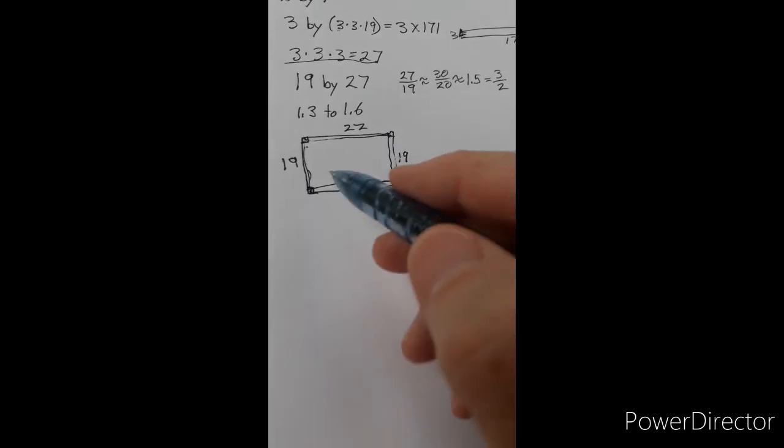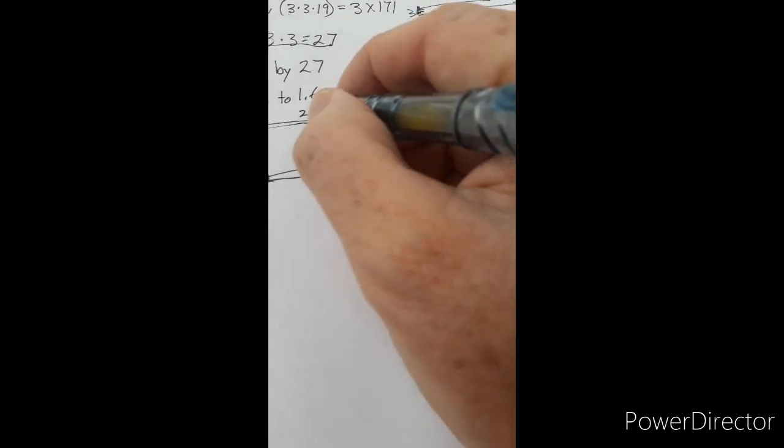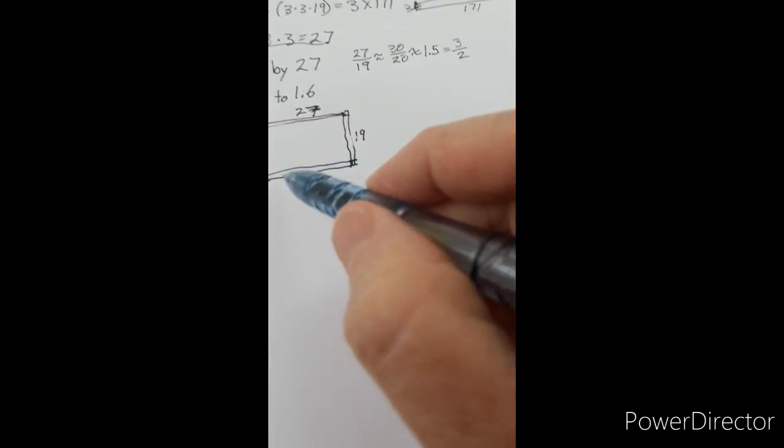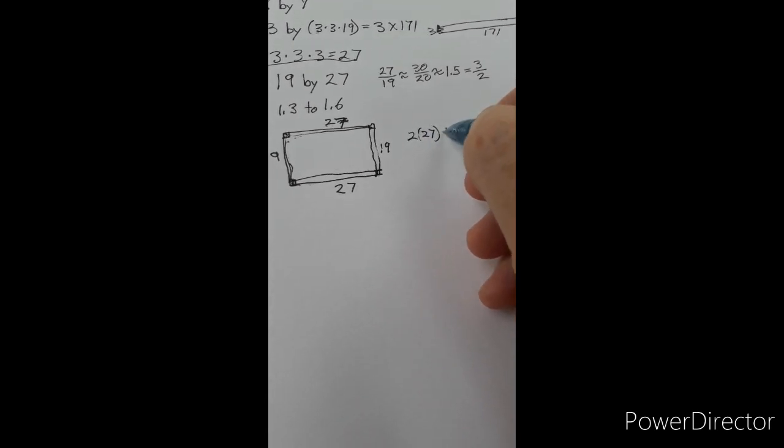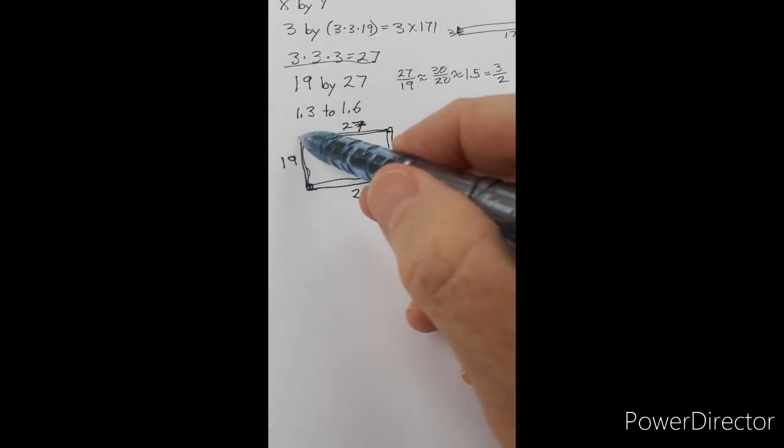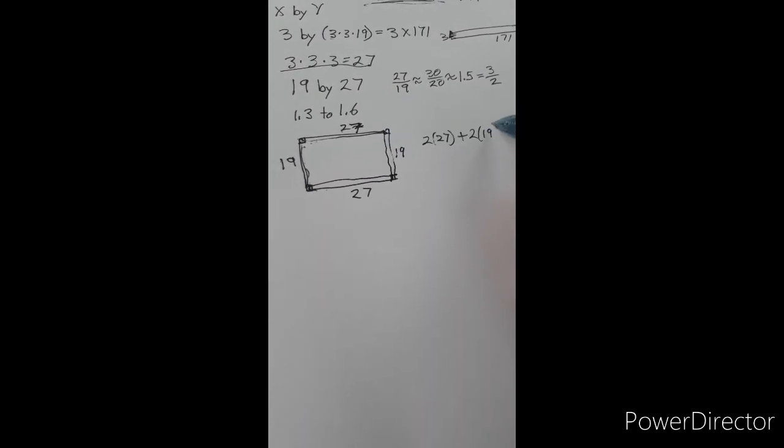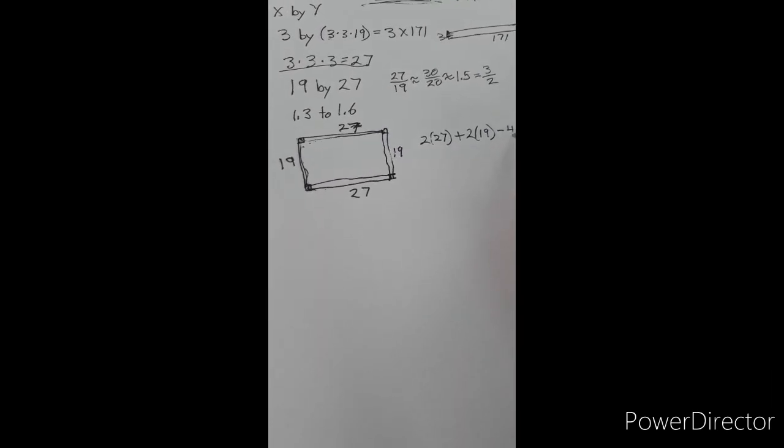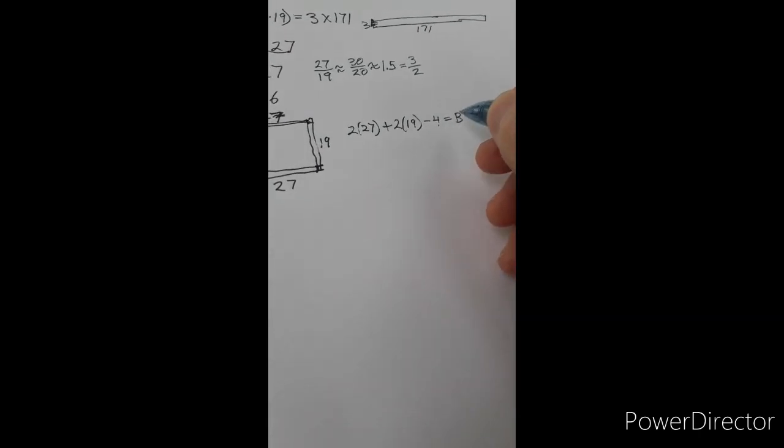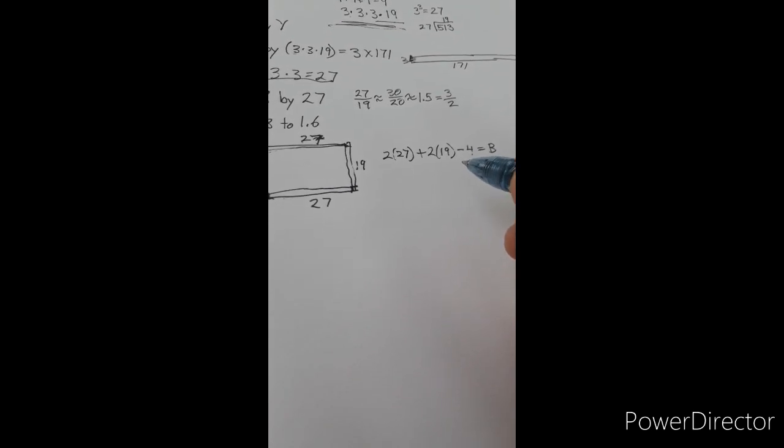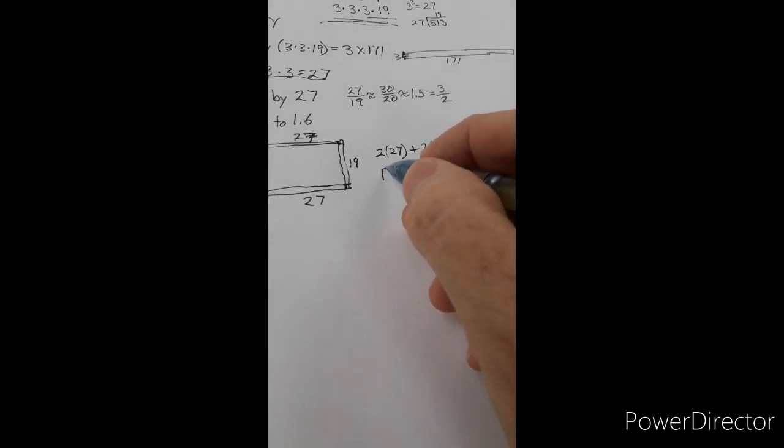So I'm going to need to subtract those four corners off in order to get the right number. Now I have 2 times 27 plus 2 times 19, and then I'm going to subtract off the four. That gives us B, the number of border pieces.